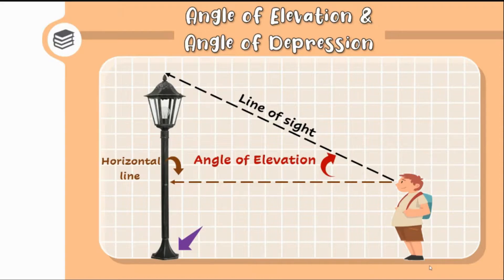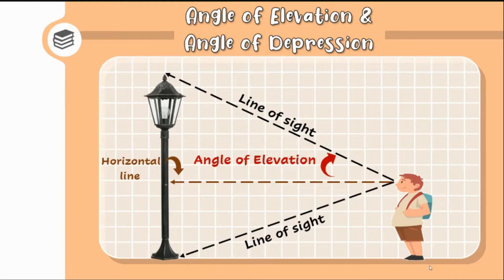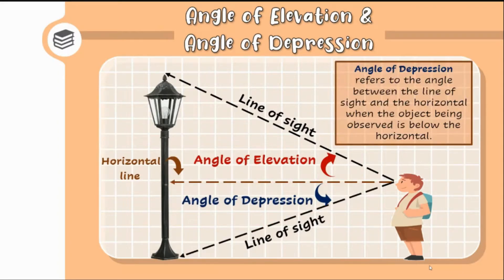What if the person is looking at the base of the post? What is the line of sight in this case? The line drawn from the eye to the base of the post is the line of sight when the person is looking at the base. In this case, the angle formed between the line of sight and the horizontal line is called the angle of depression. When the person is looking down, the angle formed by the line of sight with the horizontal is the angle of depression, and the line of sight is below the horizontal line.